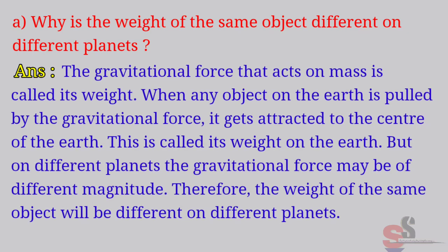The gravitational force that acts on mass is called its weight. When any object on the earth is pulled by the gravitational force, it gets attracted to the center of the earth. This is called its weight on the earth. But on different planets, the gravitational force may be of different magnitude. Therefore, the weight of the same object will be different on different planets.